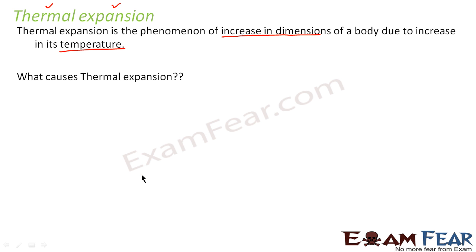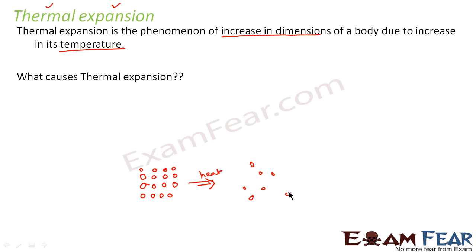Let us suppose there is a certain object made up of molecules, and initially the molecules are arranged in an orderly way. Now you heat this substance and the molecules start moving randomly here and there. Even though the number of molecules remains the same, since they are moving randomly they are not placed orderly one after another — they maintain a greater average distance with each other.